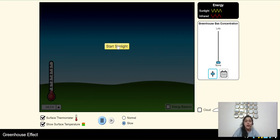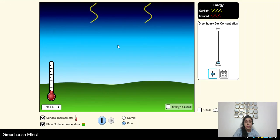When we click on this button, start sunlight. See, sun rays are coming and reaching the surface of the earth. These are the sun rays which are coming from the atmosphere and reaching the surface of the earth.